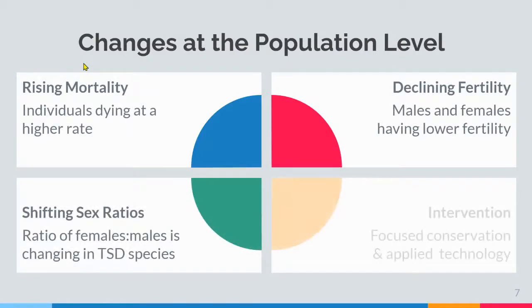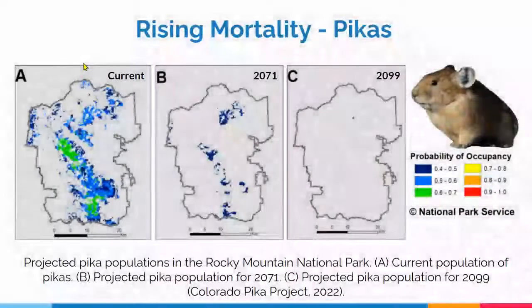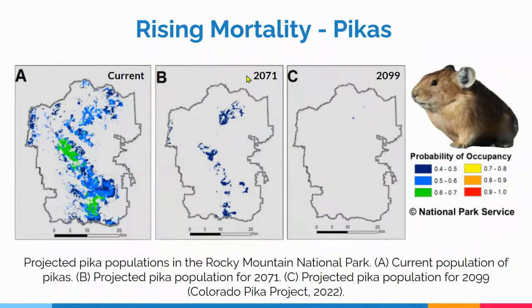However, human intervention through conservation and technology can help mitigate some of these changes. I'll talk about rising mortality rates first. Within populations, mortality rates are rising for species that are sensitive to changes in temperatures, like pikas shown here.